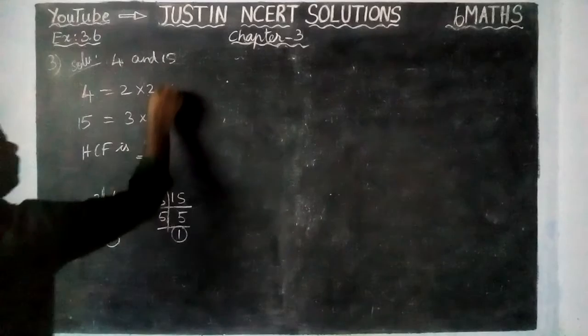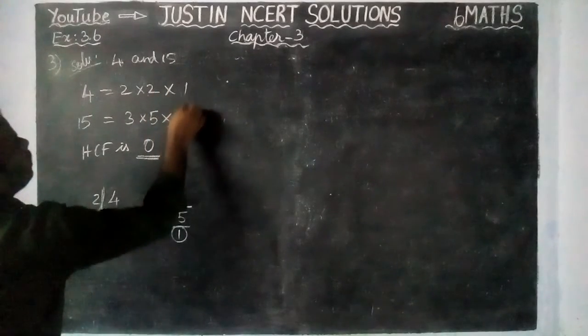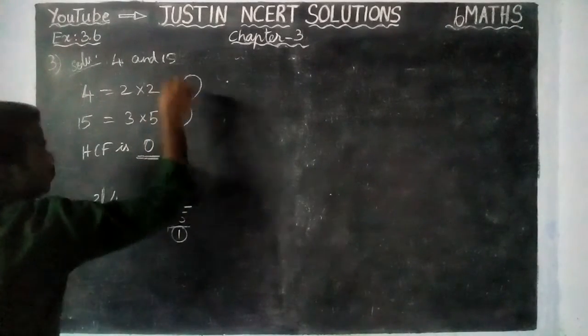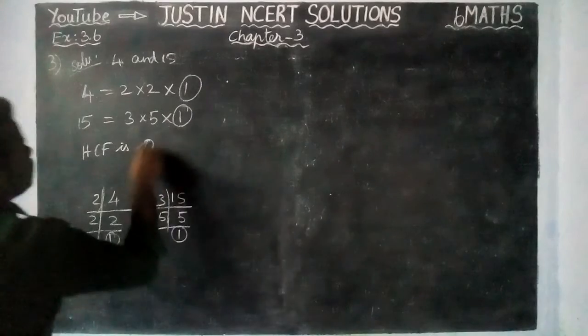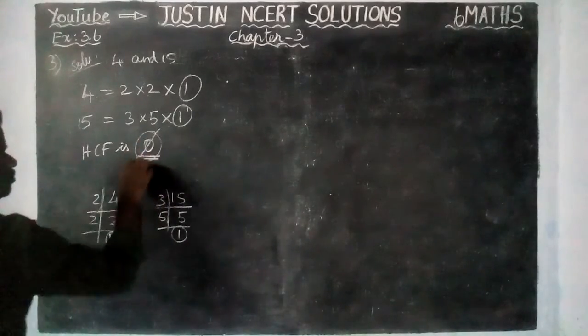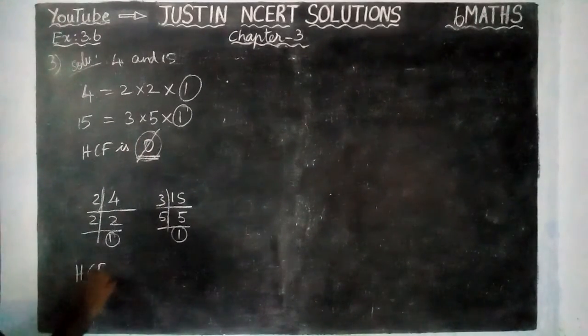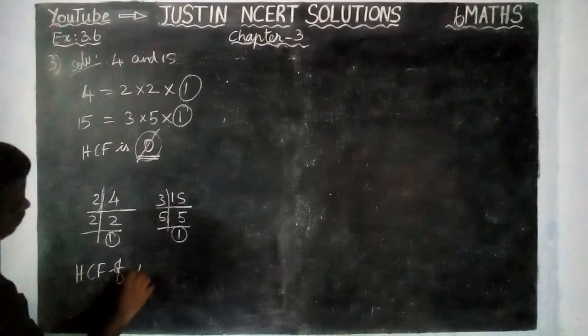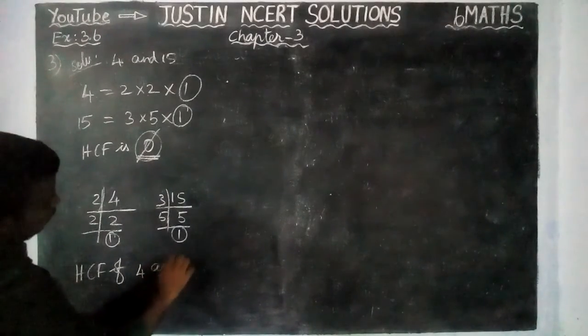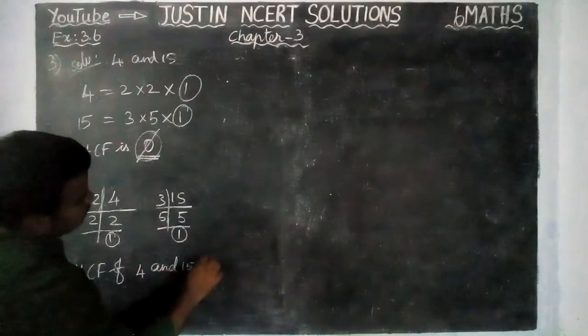1. So we can write it 1 into 1. Here, common factor is 1. Therefore, this HCF is wrong. HCF of 4 and 15 is 1.